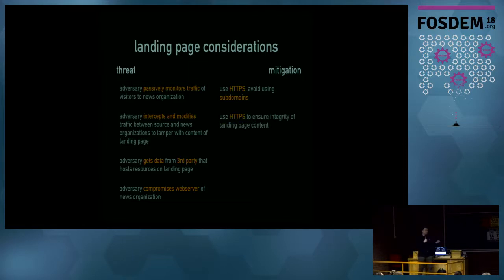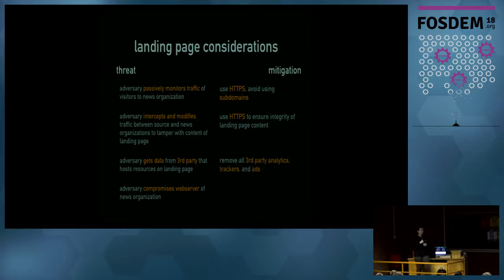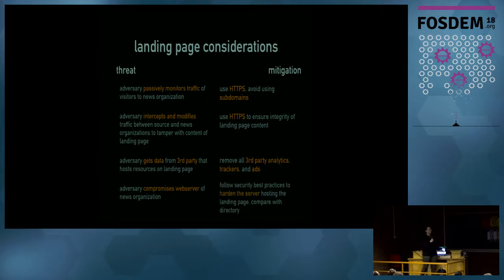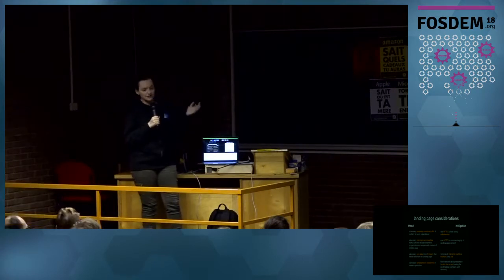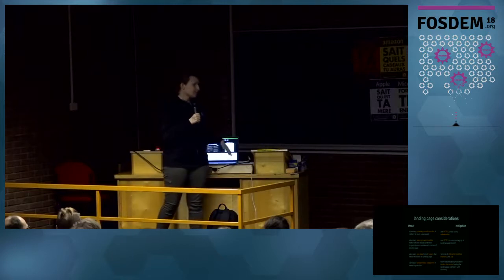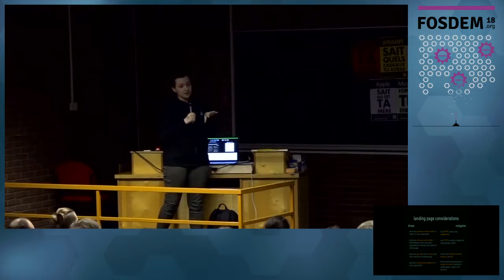To mitigate passive monitoring, news orgs must use and enforce HTTPS, and should avoid using subdomains — if your SecureDrop is at supersecret.newsorganization.com, the subdomain itself is not encrypted. For landing page integrity, HTTPS helps, and we verify that all third-party trackers and ads are removed from just the landing page — requiring that for the entire news org website would be infeasible. We also encourage news orgs to follow security best practices and in some cases suggest an external pen test. Sources can also compare the Onion address with our directory.